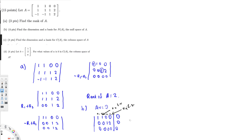Creating the equations: the first row gives x1 plus x2 equals 0, so x1 equals minus x2. The second row gives x3 plus 2x4 equals 0. Since x4 is the free variable and x3 is not, I write x3 in terms of the free variable: x3 equals minus 2x4.